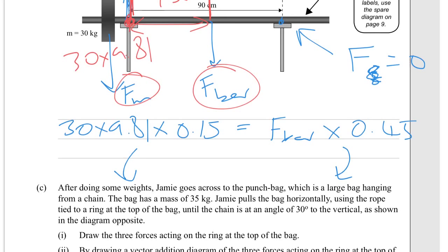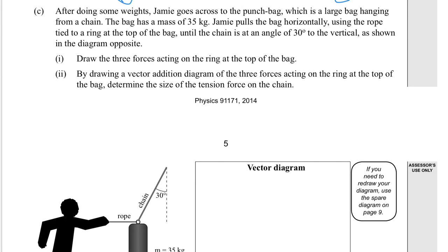Part c: After doing some weights, Jamie goes across to the punch bag, which is a large bag hanging from a chain. The bag has a mass of 35 kg. Jamie pulls the bag horizontally using the rope tied to a ring at the top of the bag until the chain is at an angle of 30 degrees to the vertical, as shown in the diagram opposite.